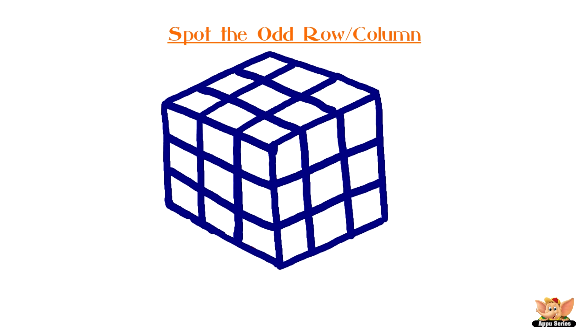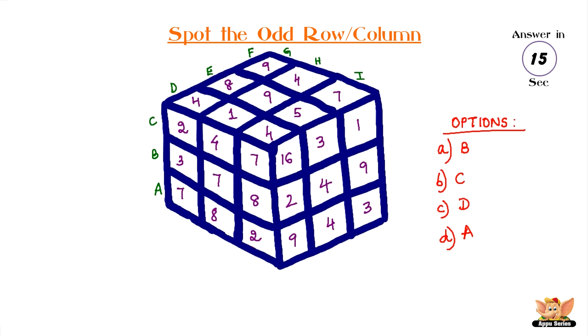Spot the odd row or column. Let's take a cube and divide it into many sections. Assign each row with letters. Each letter has a row of six numbers as shown. Find the row which is different from the others. Option A: B, Option B: C, Option C: D, and Option D: A. Can you figure it out? The clock is ticking.